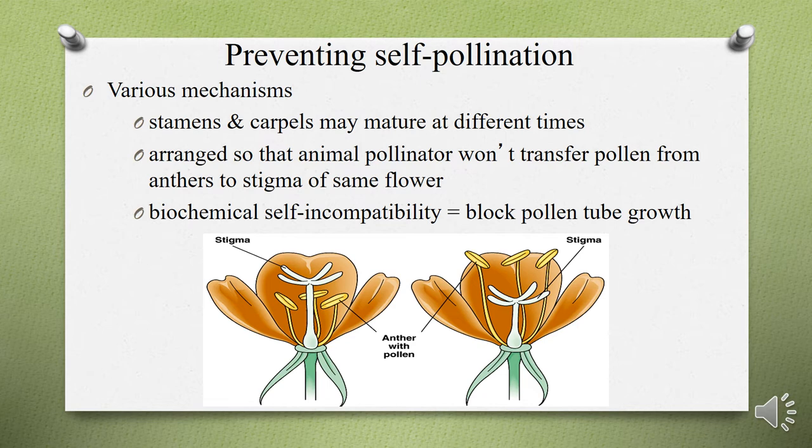The mechanisms that prevent self-pollination include: stamens and carpels maturing at different times, so stigmas are pollinated by pollen from another flower or plant; male and female reproductive organs arranged so that animal pollinators won't transfer pollen from anthers to stigma of the same flower; and biochemical self-incompatibility that blocks pollen tube growth, causing pollen tube growth to cease.